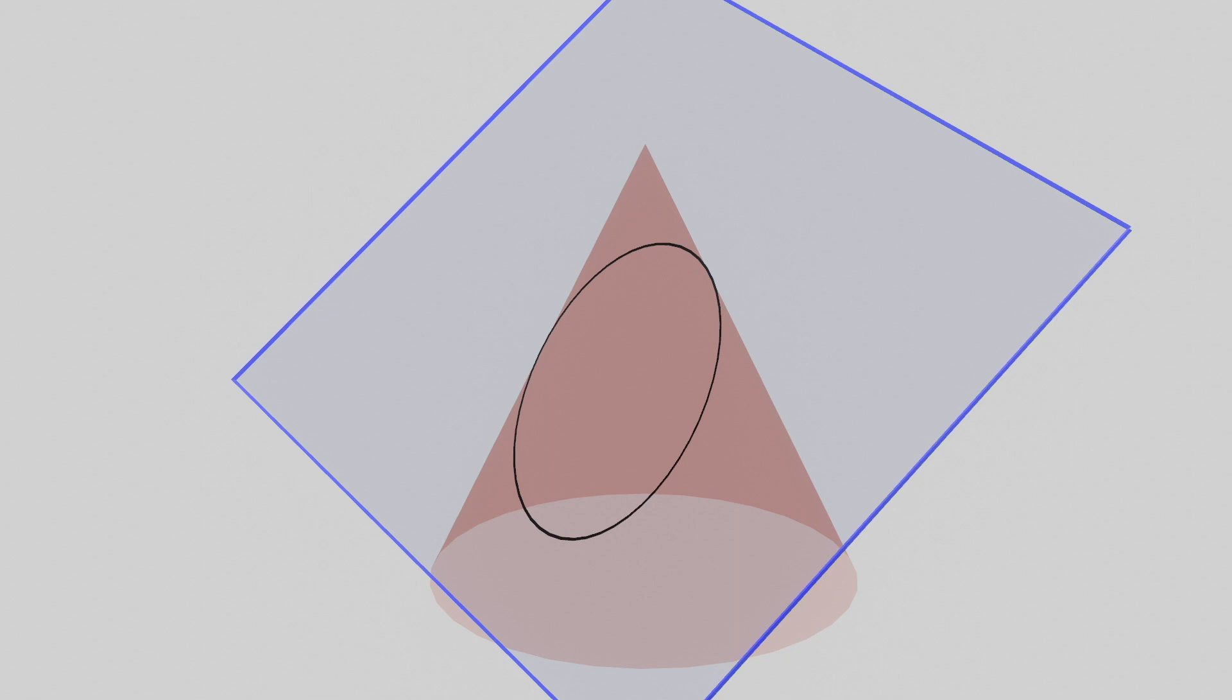If we were to pick two points inside this curve and show that the sum of distances to any point on the shape itself is constant, then we would have successfully shown that it is an ellipse.